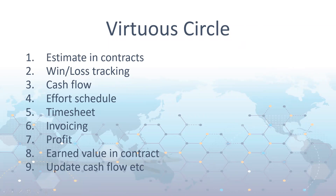You can assess the earned value from actual timesheet entry — how far have you progressed along the deliverable? You may have 100 hours estimated, done 50 hours actual, and think that's 50% progress — but you might only be at 30%. That means you've only earned 30% of the job. You've got a schedule, an actual, and an earned value. That earned value analysis enables you to update both the effort and cash flow of that job.